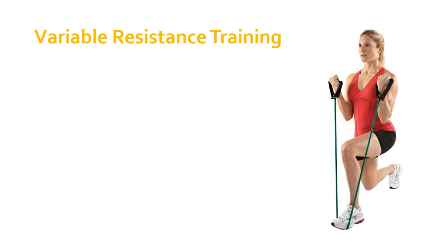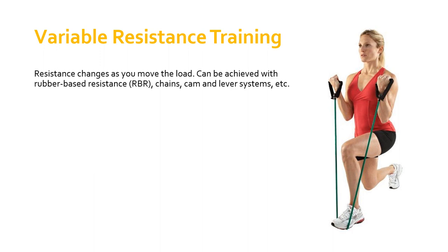The next method for training for strength is called variable resistance training, also sometimes known as accommodating resistance training. In variable resistance training (VRT), the resistance provided by the load changes as you move the load — it actually changes within the rep. You're not changing the load after completing a set as you would in pyramid training; the resistance is changing as the load is being moved within the rep. The main ways to achieve this are rubber-based resistance bands, chains, cam and lever systems, and similar equipment.